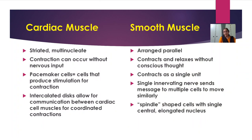Here are some differences between cardiac muscles and smooth muscles. Cardiac muscles are striated and multi-nucleated; smooth muscles are spindle-shaped cells with a single central elongated nucleus. In cardiac muscles, contraction can occur without the nervous system; in smooth muscles, contraction and relaxation occur without conscious thought. Cardiac muscle pacemaker cells produce stimulations for contraction. Smooth muscle contracts as a single unit. Intercalated discs allow communication between cardiac muscle cells for coordinating contractions, while a single innervating nerve sends messages to multiple smooth muscle cells.